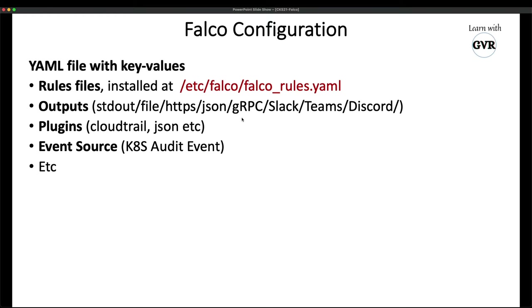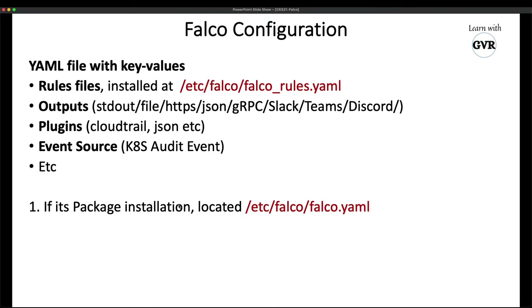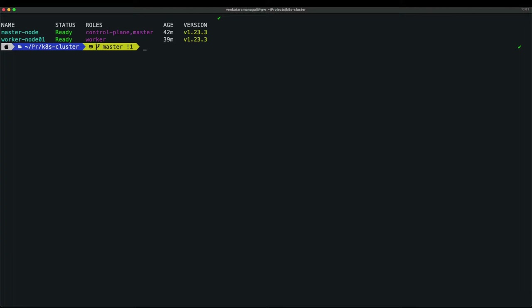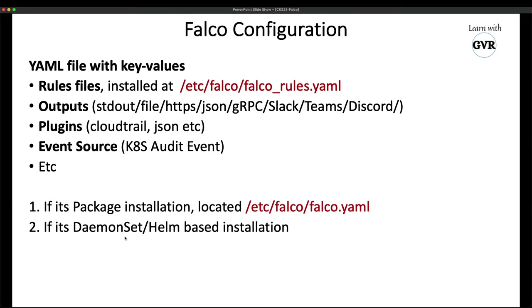Falco can be installed in two different ways: one is package-based installation using the Linux standard apt-get install approach, and the second is a DaemonSet — you can install it using Helm directly, or install as a DaemonSet or Helm.